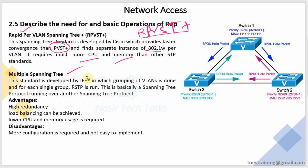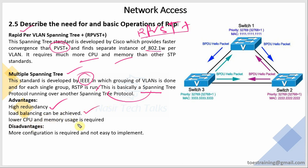Multiple Spanning Tree (MST) — this standard is developed by IEEE, so any vendor's device can run it. VLANs are grouped, and for each single group, RSTP is run. So you can group VLANs, and per group MST or Multiple Spanning Tree operates. This is basically spanning tree protocol running over another spanning tree protocol. Advantages: high redundancy — MSTP is best for link redundancy. Load balancing can be achieved. Lower CPU and memory usage is required — one of the most important features. Disadvantage: more configuration is required and not easy to implement — configuration is a bit tougher than other STP protocols.